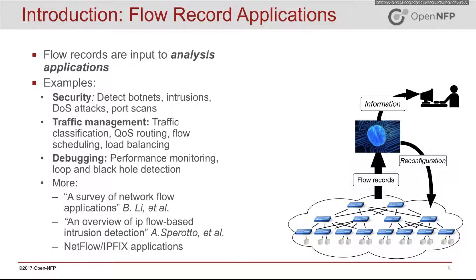Generally, these analysis applications have two high-level goals that are common. One is to provide information to network operators about the conditions of the network, security threats, and so on. The second goal is that a lot of times these analysis applications make decisions about reconfiguring the network. Over the last few years there have been many examples of these types of applications with OpenFlow work.